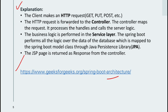The HTTP request is forwarded to the controller. The controller maps the request, processes it, and handles the calls to the service logic. The business logic is performed in the service layer. Spring Boot performs all logic over the data mapped to Spring Boot model classes through JPA — Java Persistence API.